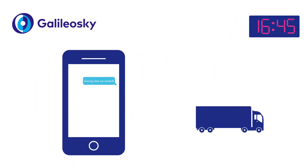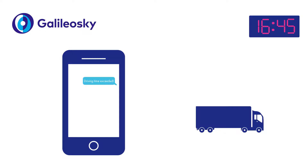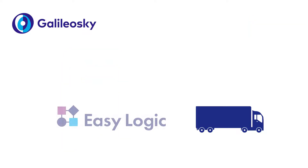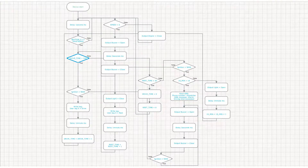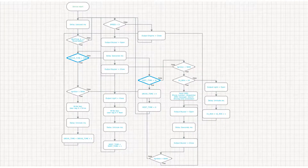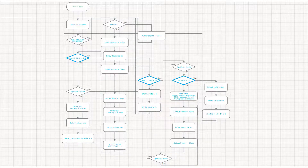How can this scenario be applied with easy logic custom programming? First, we set three variables: drive time — 4 hours, rest period — 30 minutes, and allowed time after driving limit is exceeded — 15 minutes.